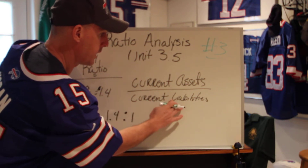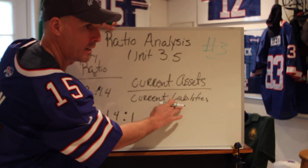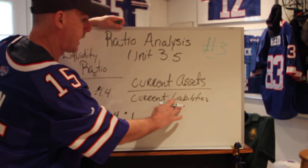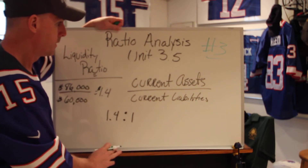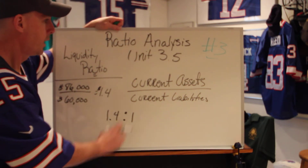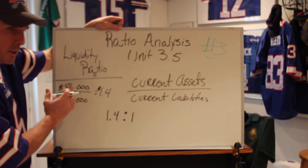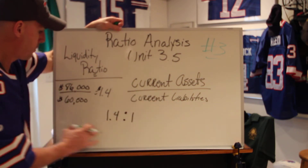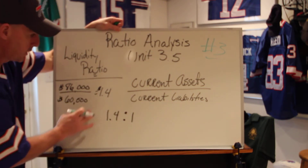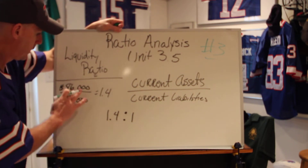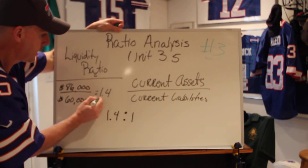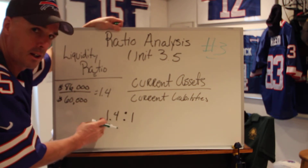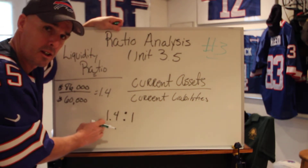You take your current liabilities, also found on the balance sheet. So in our example, current assets equal $86,000 and current liabilities equal $60,000. If I divide those, I get a number of 1.4.